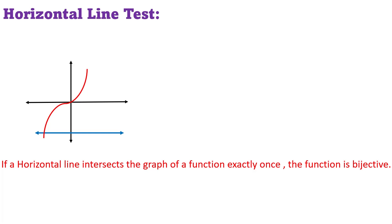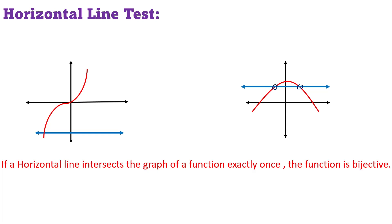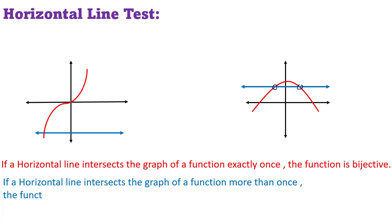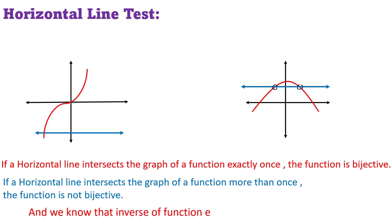So if a horizontal line intersects the graph of a function exactly once, the function is bijective. However, if we take another graph and draw a horizontal line that intersects the graph in two points — more than one point — then the function is not bijective. The horizontal line test states: if a horizontal line intersects the graph exactly once, it is bijective; if more than once, it is not bijective.